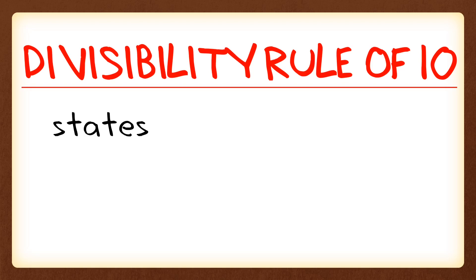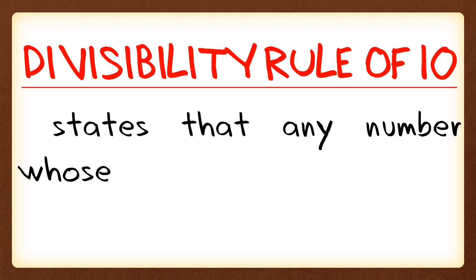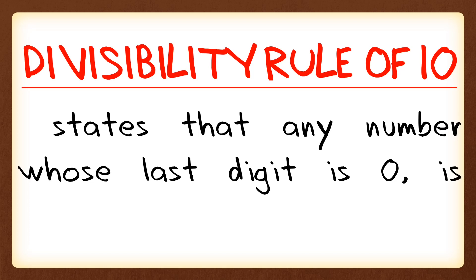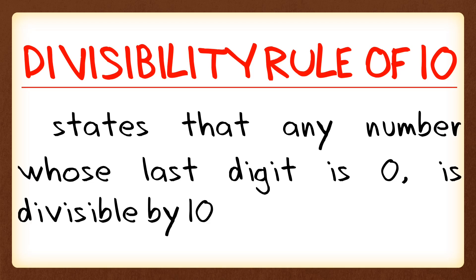The divisibility rule of 10 states that any number whose last digit is 0 is divisible by 10. So it is very easy to determine — just look at the last digit. If the last digit is 0, then the number is divisible by 10.